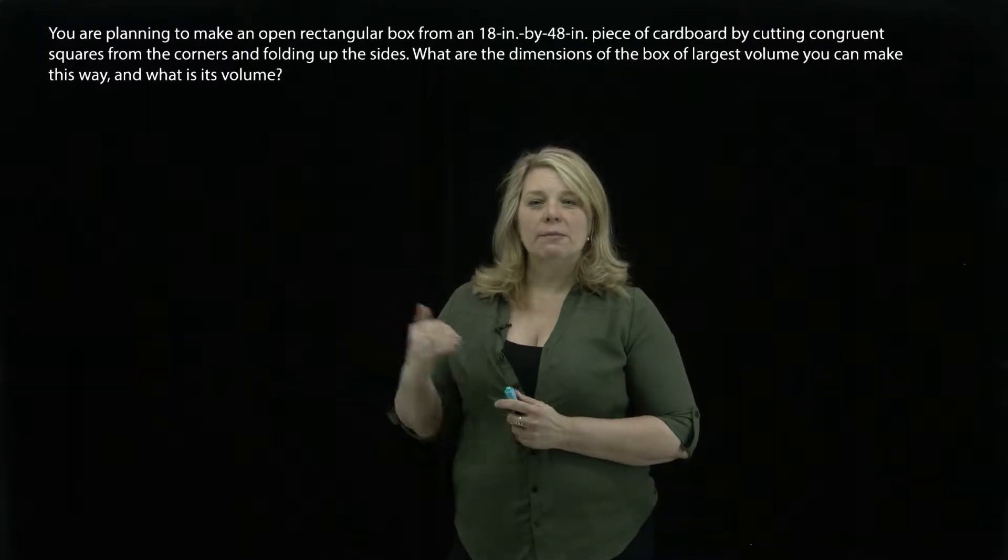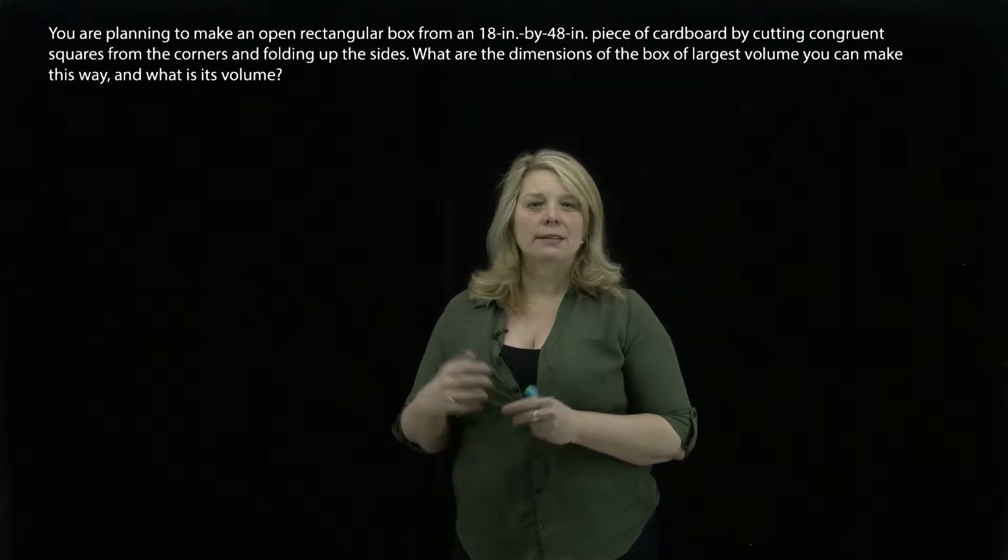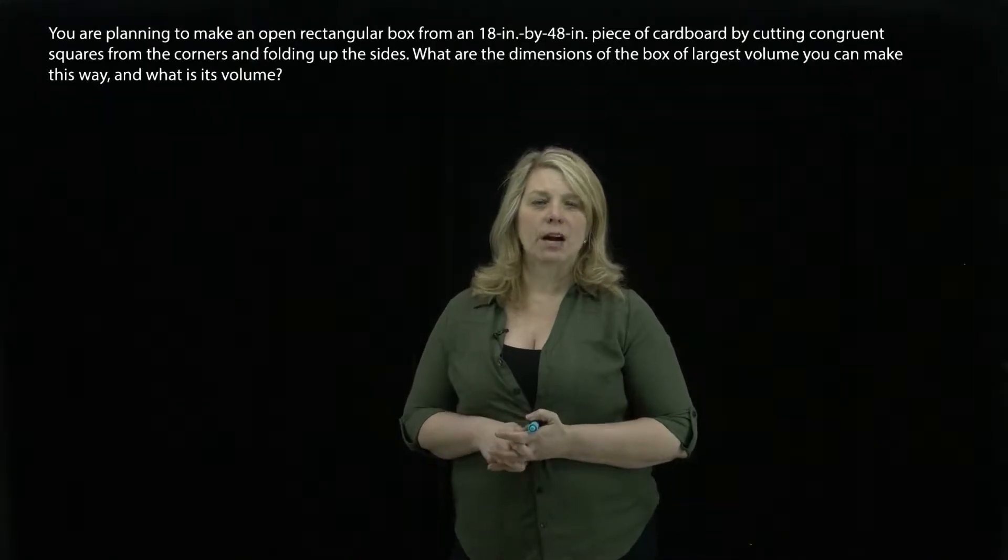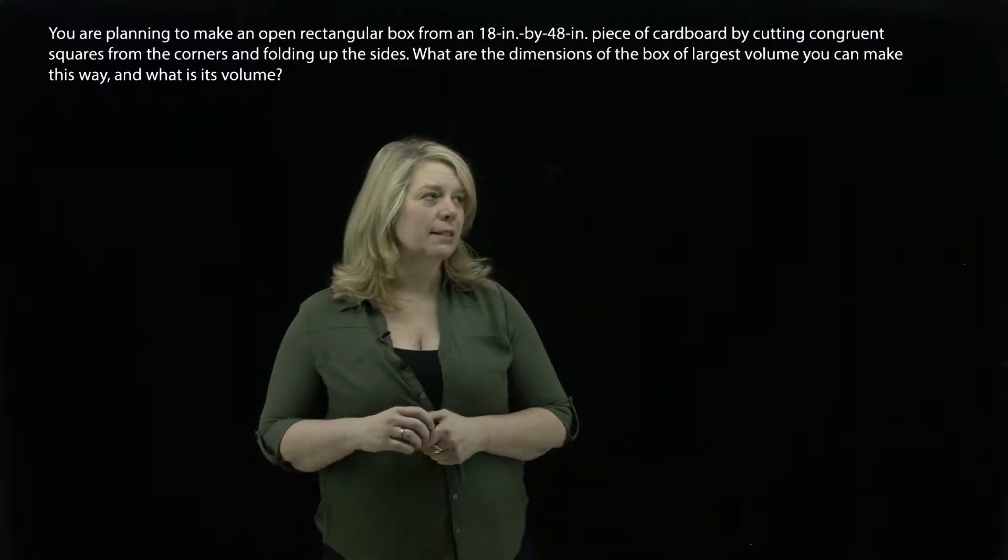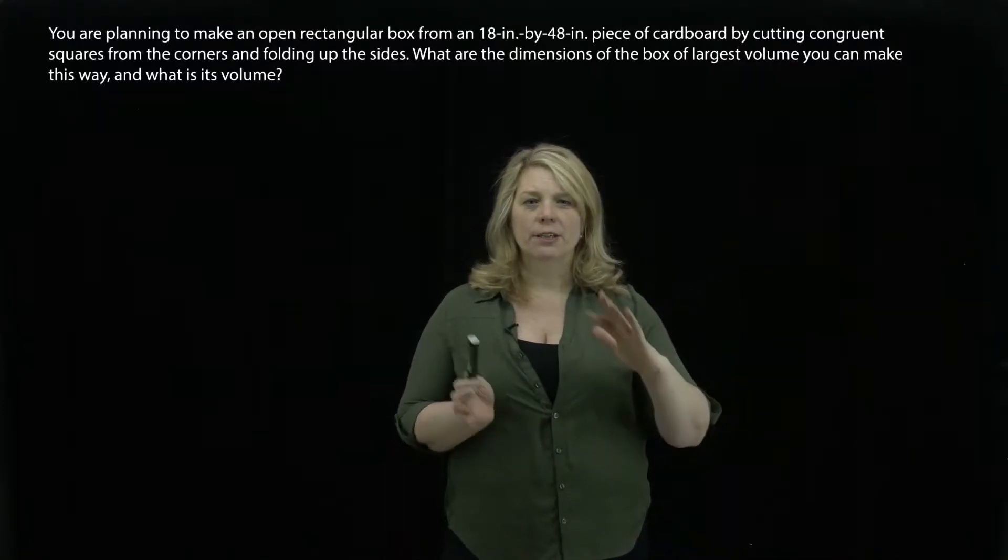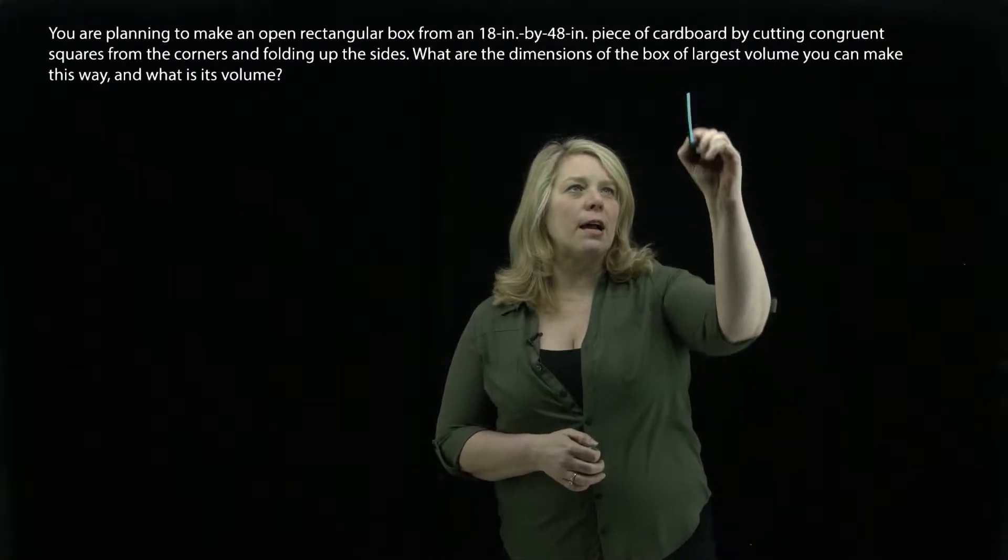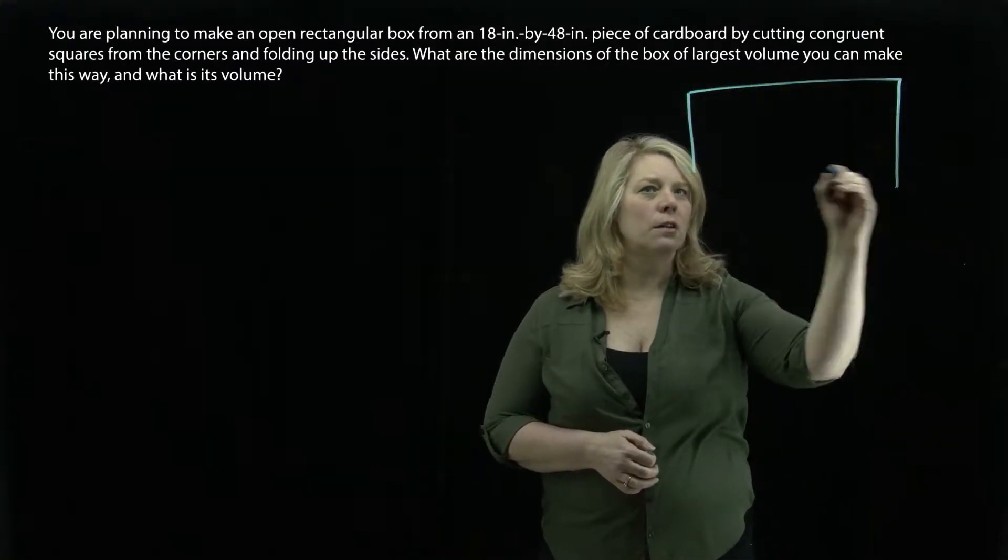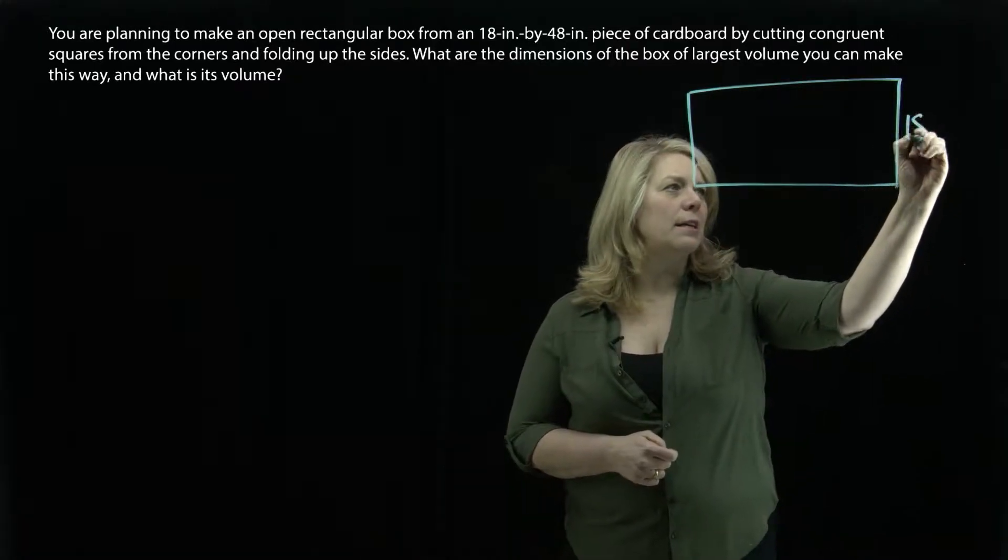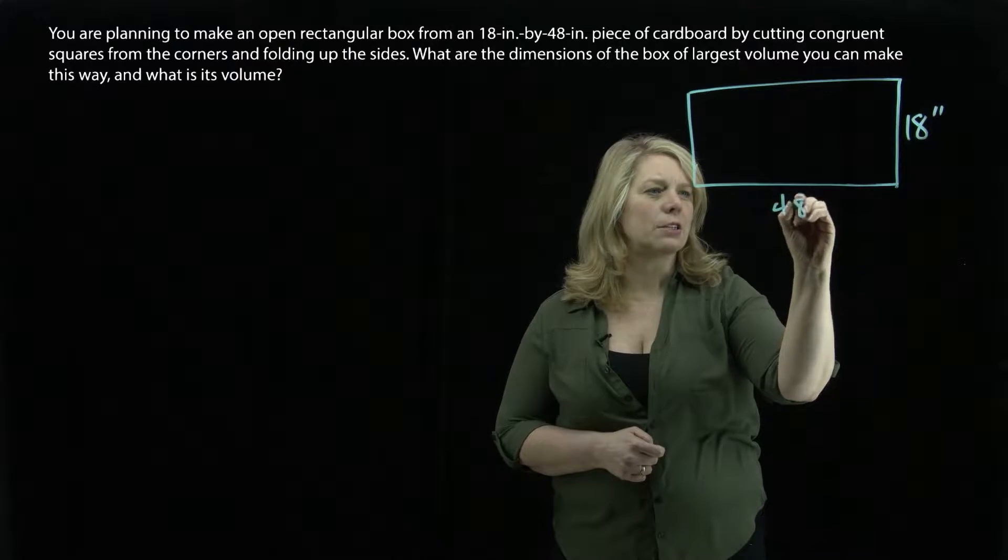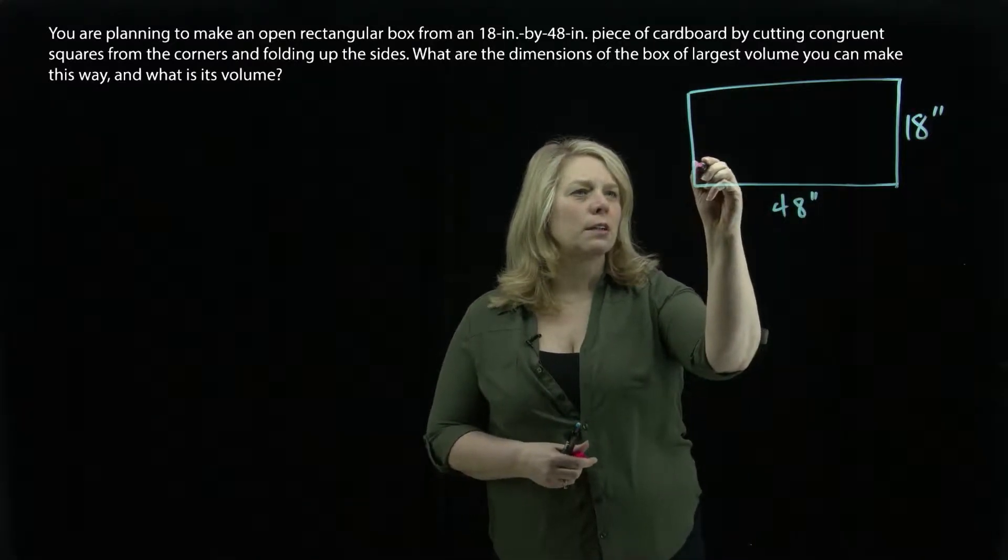We're going to make an open rectangular box from a flat 18 by 48 inch piece of cardboard, cut squares out of the corners, and fold up the sides. I'm going to draw a diagram here, just making sure we're clear about what exactly is going to happen. We've got this flat rectangular piece of cardboard that is 18 inches by 48 inches. And we're going to snip out of the corners little squares.